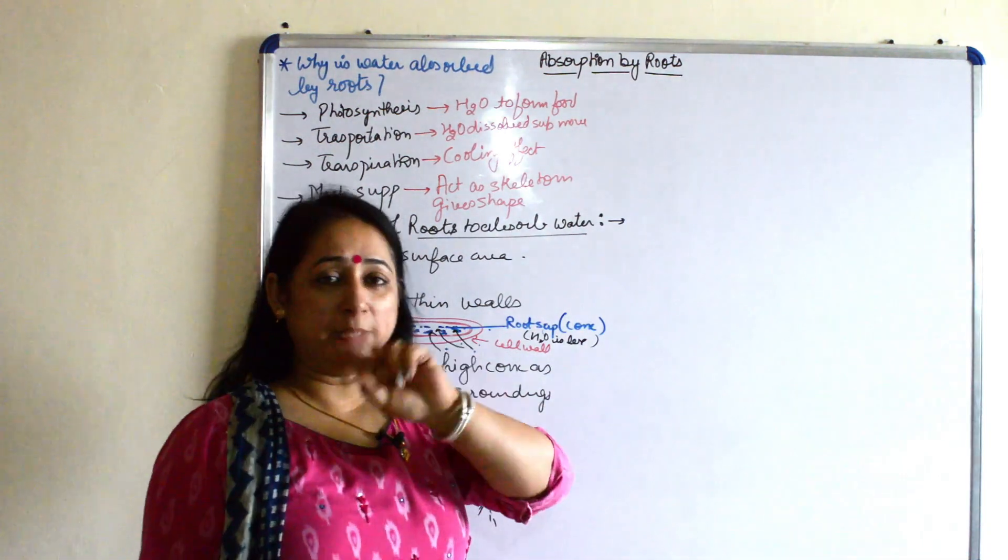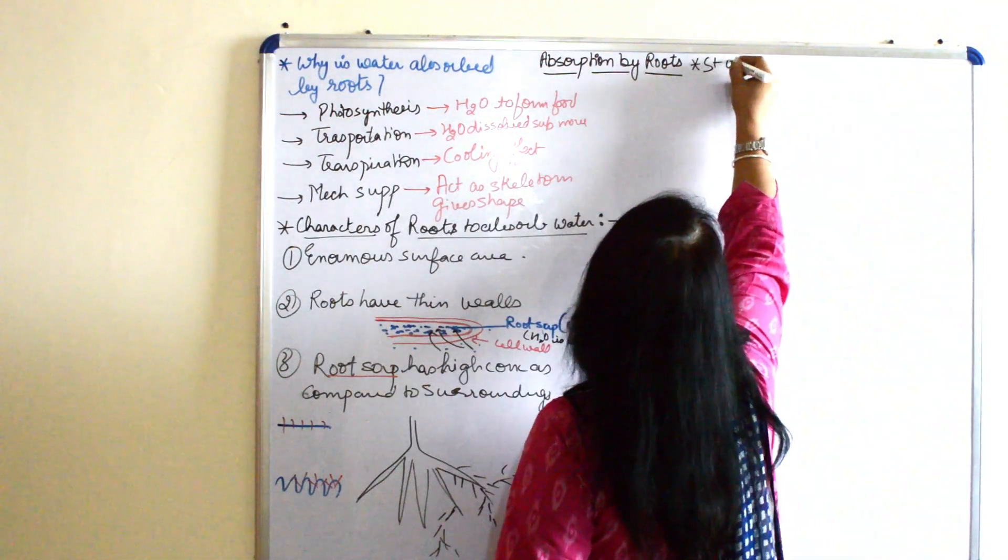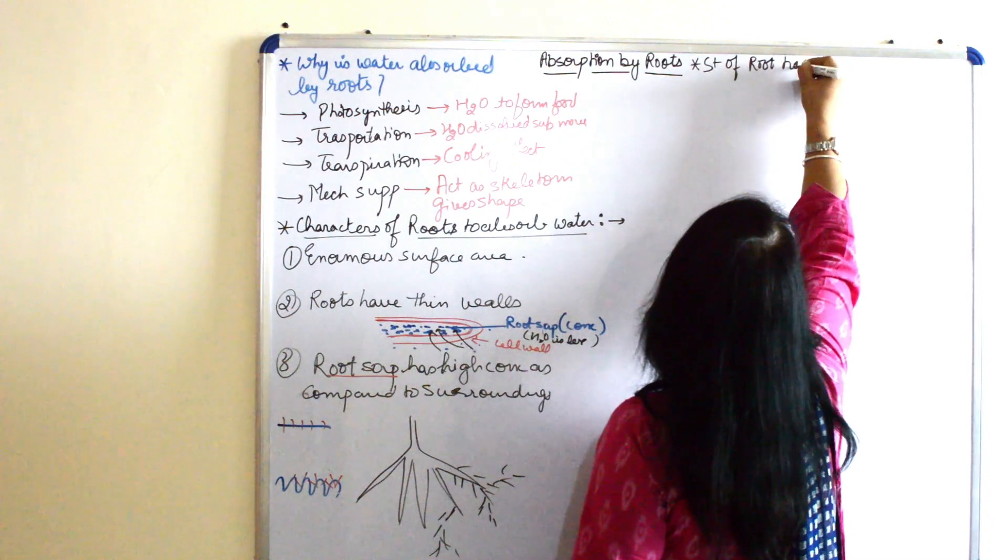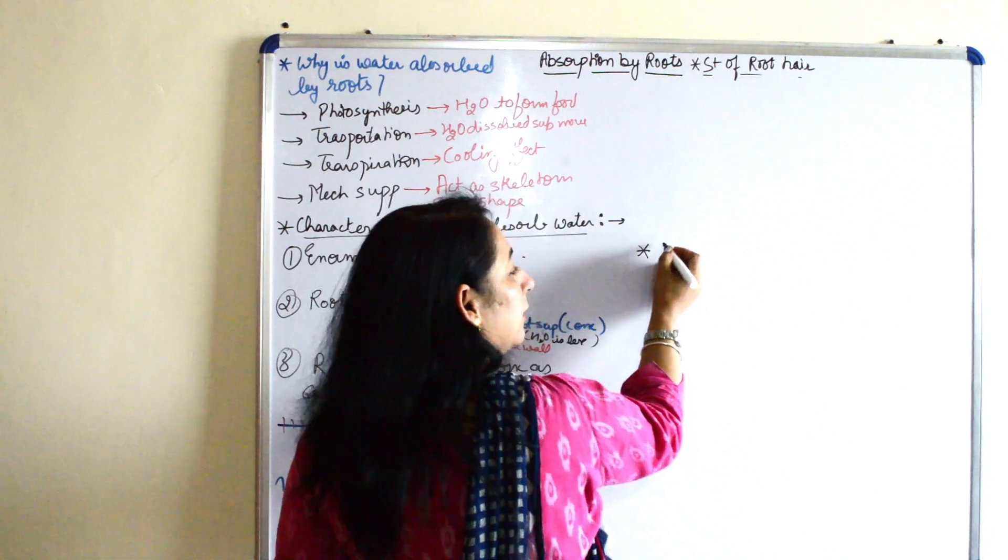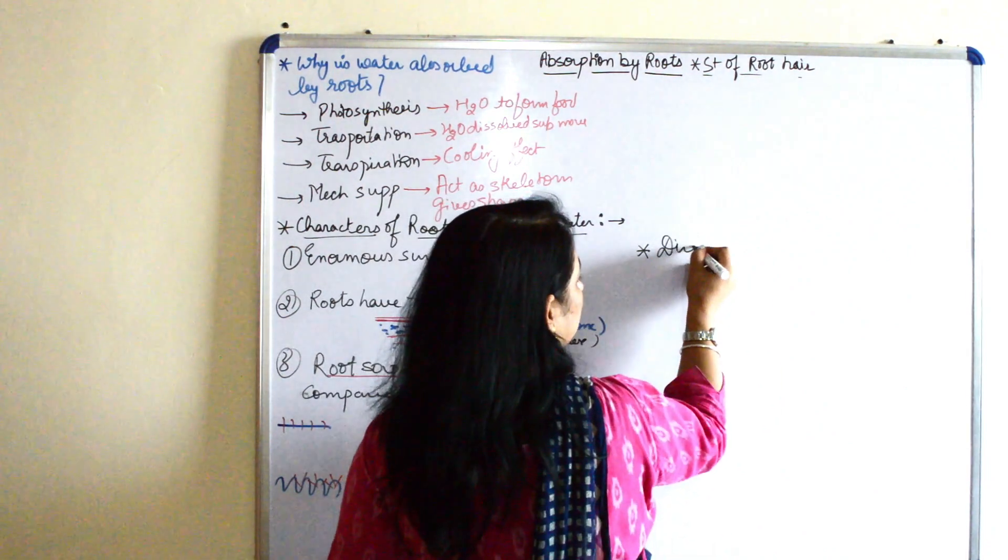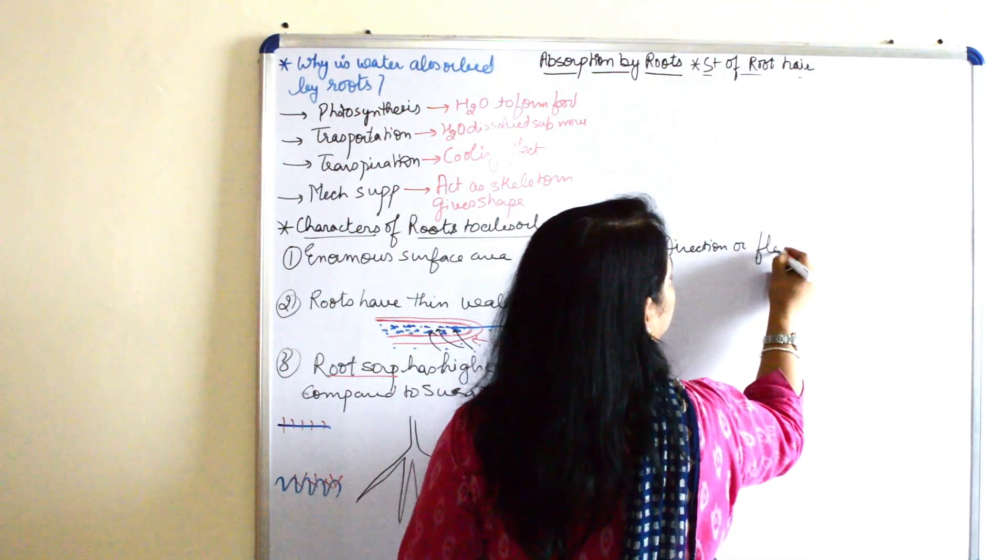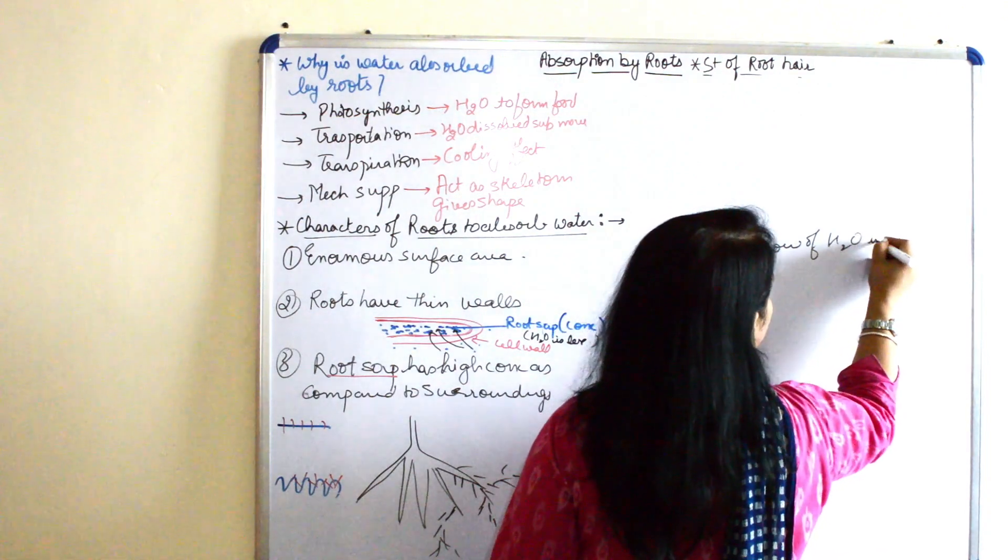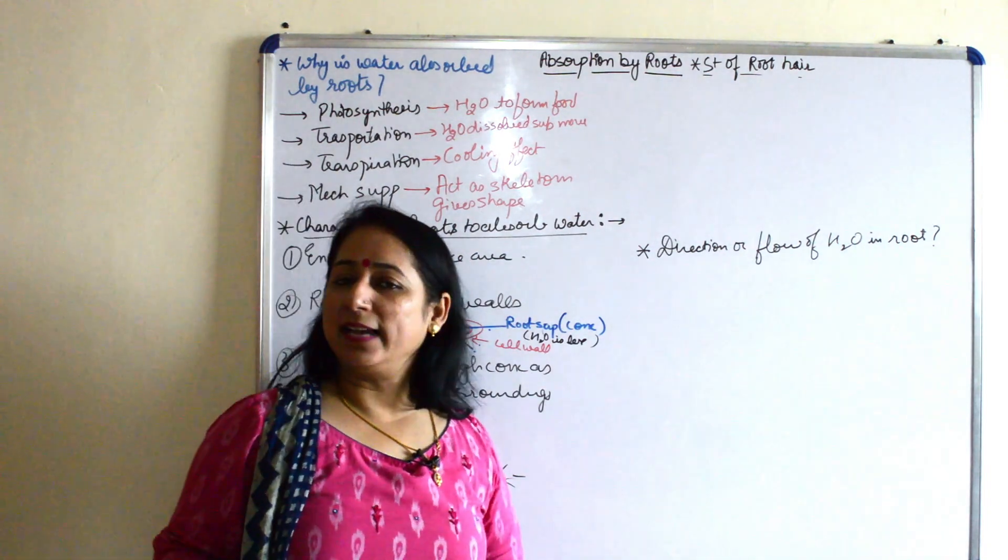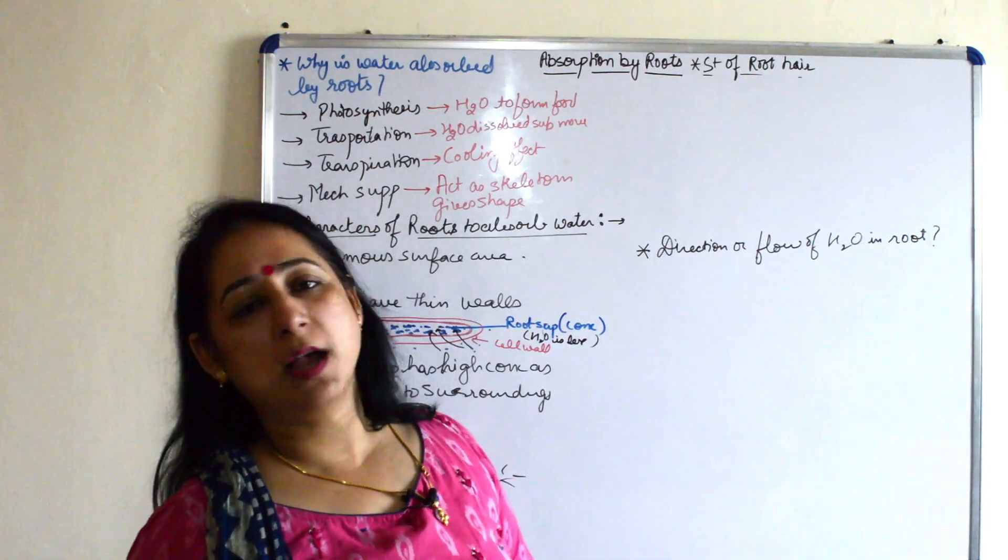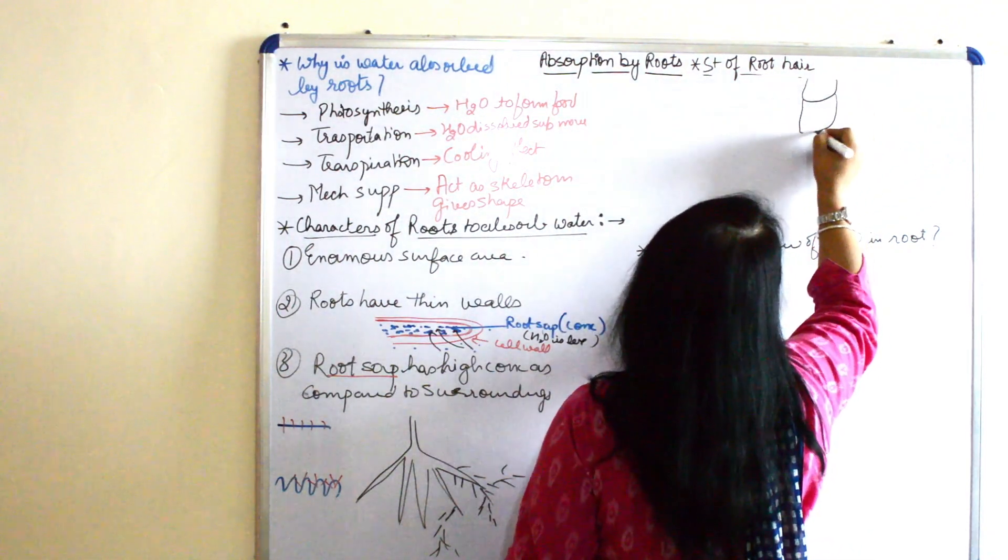Now we have two things. One, the structure of a root here, and the second thing which I want to discuss here is the direction or flow of water in roots. These are two very important questions from your paper point of view. Many times these diagrams are there in the paper and you are asked to label it. So let's understand the structure of root, that is a simple one.